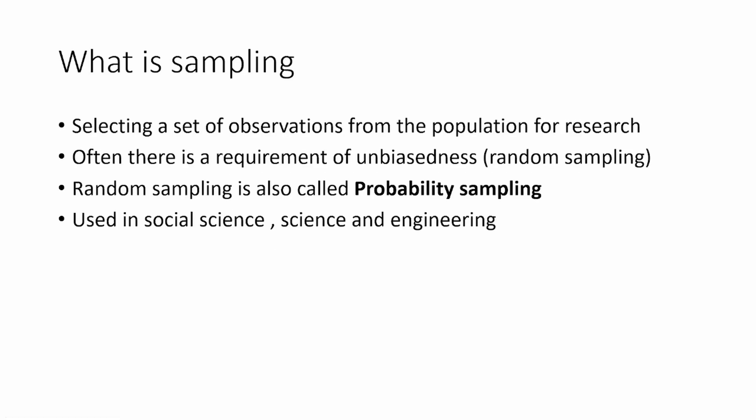Before that, we will talk about what is sampling. Sampling is about selecting a set of observations from the population to do research. You want to do research on the sample, not on the full population, but you want to draw conclusions about your research on the entire population. So you want to extrapolate the conclusion from the sample to the population — that's why we do sampling.